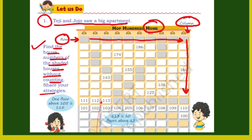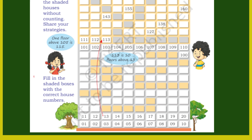Share your strategies. यहां पर हमें जो shaded region है, जितने भी box में color किया हुआ है उनके number पता करना है, लेकिन बिना counting किये. तो चलिए देखते हैं कैसे करेंगे. Now fill in the shaded boxes with the correct house numbers. हमें जो भी shaded region है उसमें सही से number को fill करना है. यहां पर 1 से लेके 20 तक तो हमें पूरी counting दी गई है, अब उसके बाद shaded region है, तो कैसे fill करेंगे?